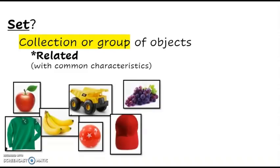Example, using these objects we can form different sets like the set of fruits. So we have apple, bananas, and grapes.